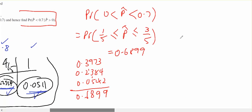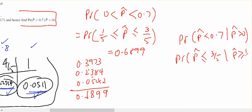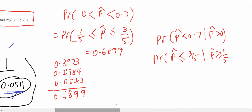So what are we after there? We're after the probability that P hat is less than or equal to 3/5 given P hat is greater than or equal to 1/5, because I can't include those endpoints.